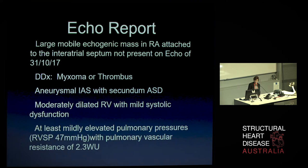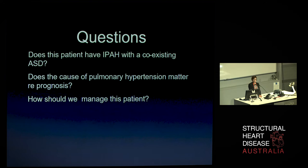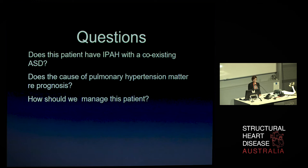This raises a number of questions. Does this patient have idiopathic pulmonary arterial hypertension with a coexisting ASD — is that even possible? Does the cause of the pulmonary hypertension matter regarding her prognosis? She was a mother of young children, and if she continued to deteriorate she was facing a heart-lung transplant. And specifically, how should we manage this patient? She has a big mass in her right atrium, an ASD, and is said to have idiopathic pulmonary arterial hypertension.